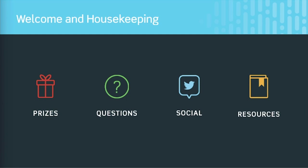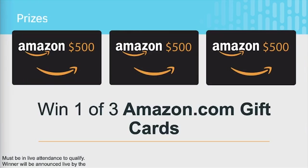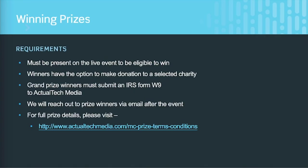We have handouts on the left-hand side with a number of PDFs and links. You can download those now and peruse them after the event. We'll be giving out three Amazon $500 gift cards on the event, and to be eligible you must be live in attendance. If you're watching on demand, the drawing has already occurred. Grand prize winners must submit an IRS form W-9 to Actual Tech Media — we'll reach out via email after the event.